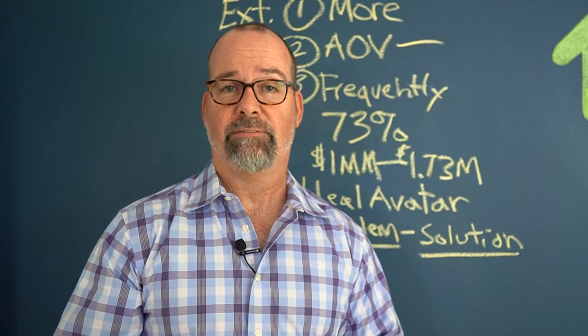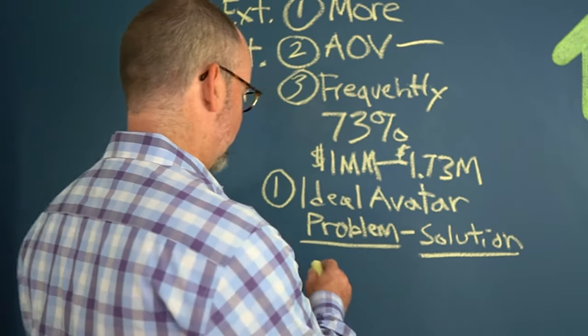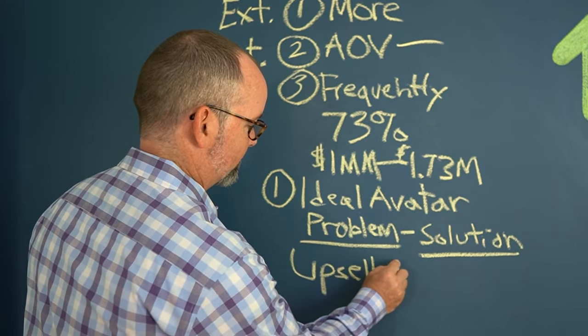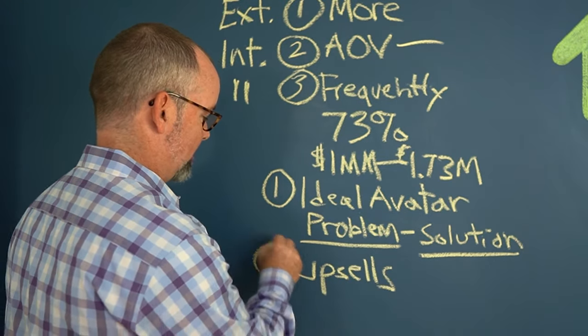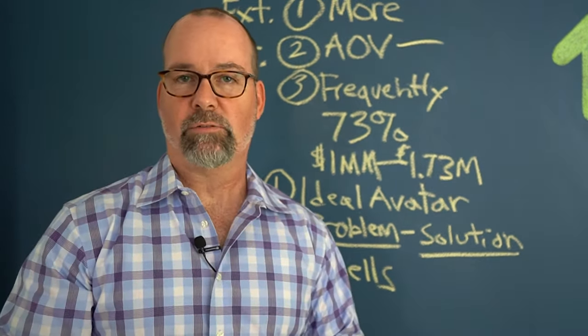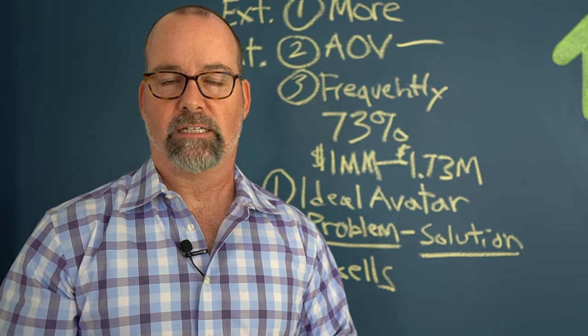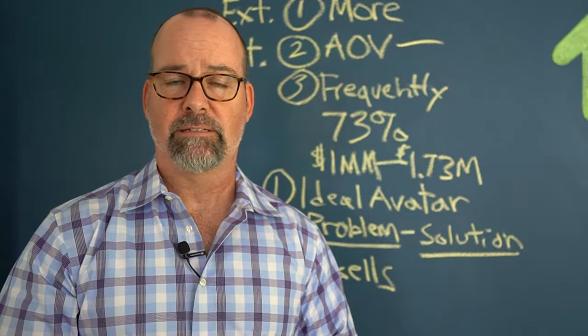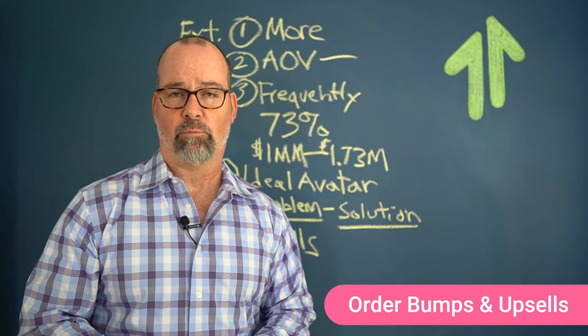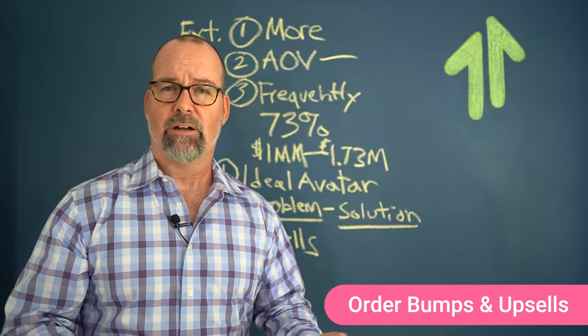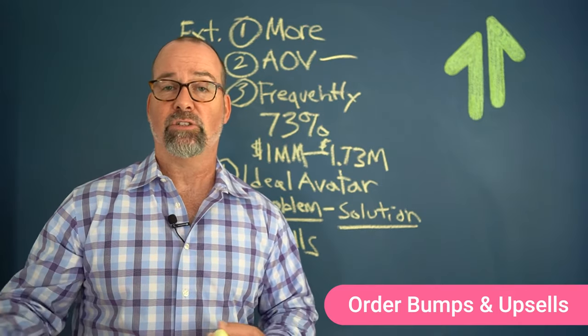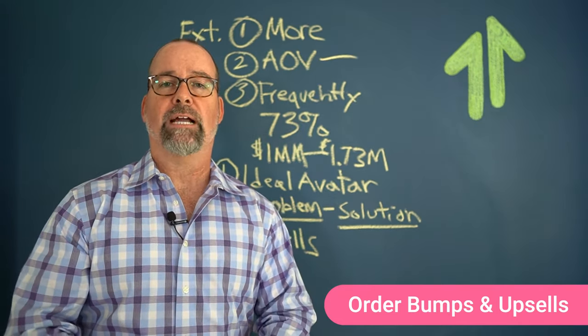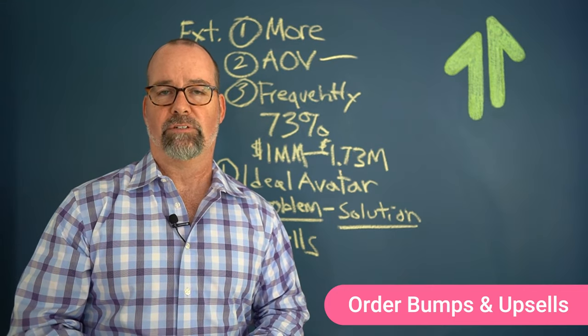Another way to increase average order value is to have what we refer to as upsells. Upsells are one of the greatest ways to enhance the average order value of any customer. Now, this could be for digital products. It could be for services. Typically, order bumps, if they're done well, or upsells, are anywhere between 5% to 20% conversion rates. So it's a great way to get more average order value for every individual customer.